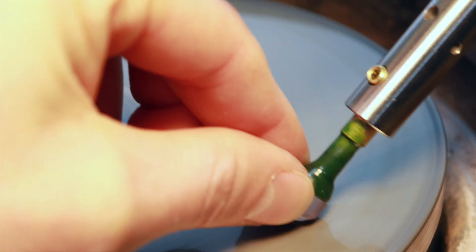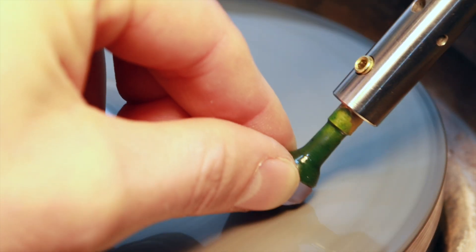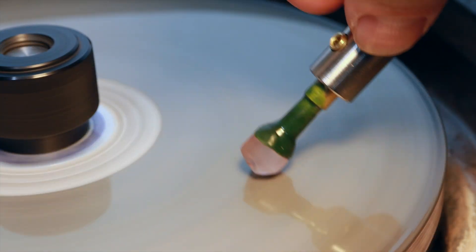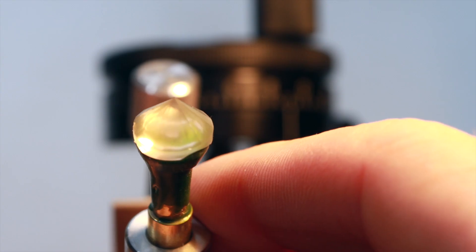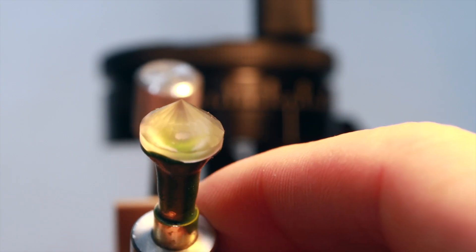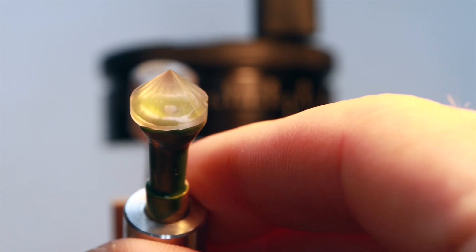I'm starting to cut the pavilion facets. This is the most important part of the cutting process. The first row of pavilion facets is used to build the rest of the design from. Any mistake here will cause errors in later stages of cutting.